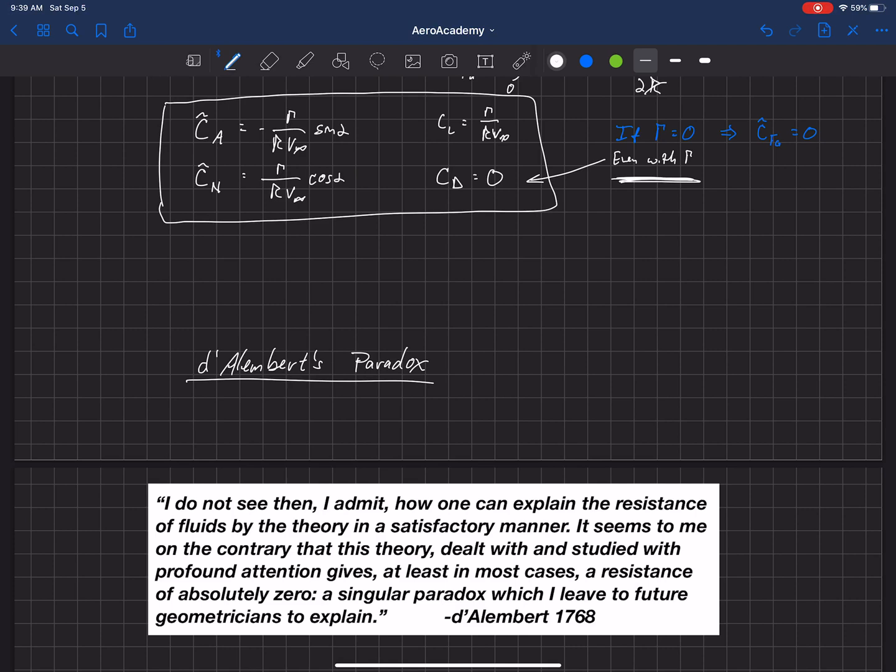he published his finding that potential flow predicted a zero drag, or at the time, I believe they called it resistance. And d'Alembert was born in 1717, lived till 1783. He first published this result in 1744.